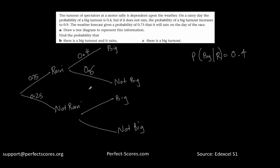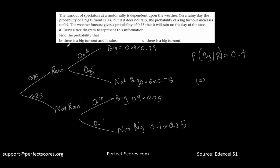Now, for each weather branch there are two cases: big turnout or not a big turnout. On a rainy day the probability of a big turnout is 0.4, so this branch is 0.4 and the not-big-turnout branch is 0.6, because they sum to one. If it does not rain, the probability of a big turnout is 0.9, so that branch is 0.9 and the other is 0.1. Part B asks: what is the probability that there is a big turnout AND it rains? That is 0.4 times 0.75, which equals 0.30.